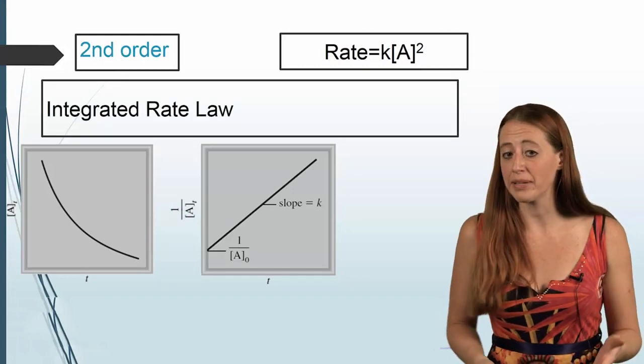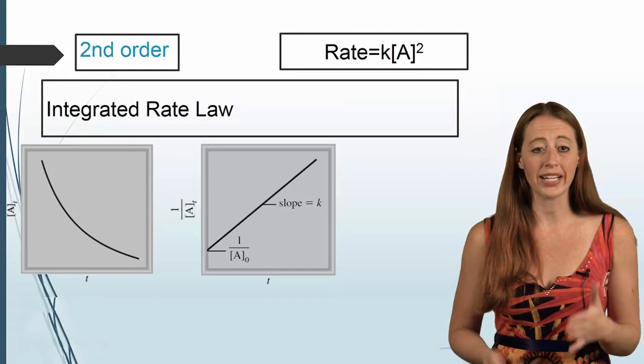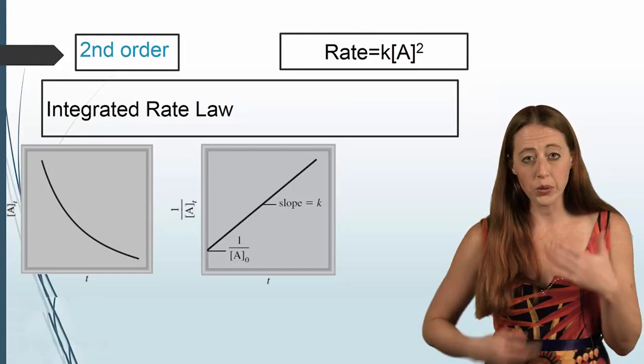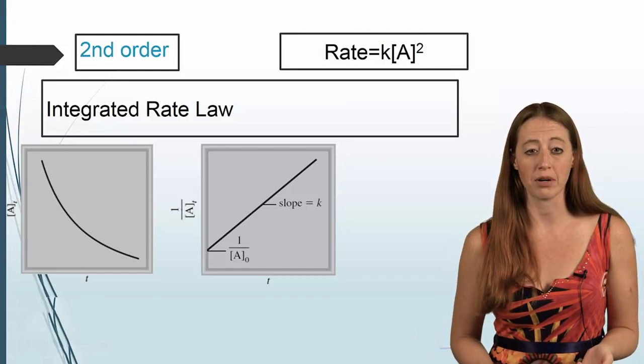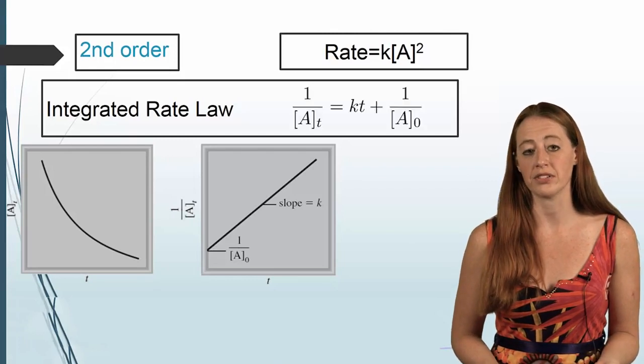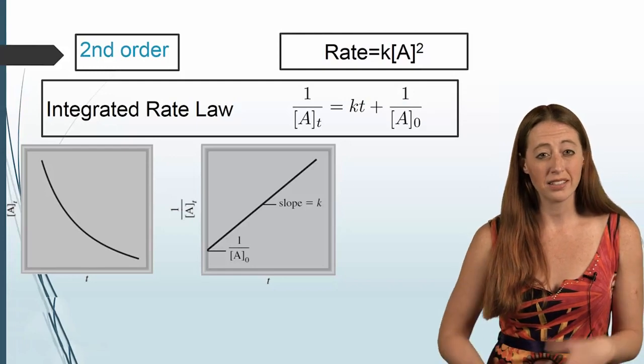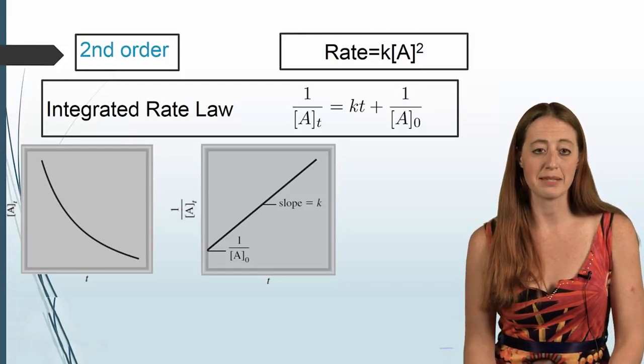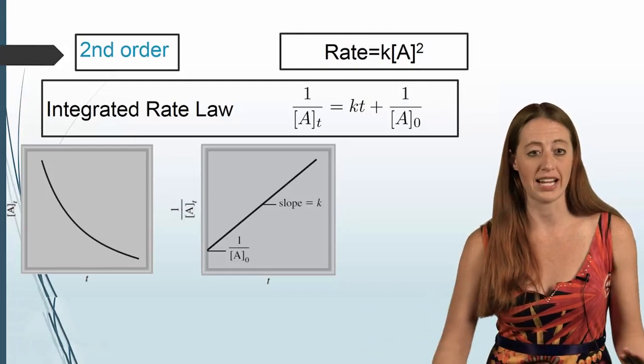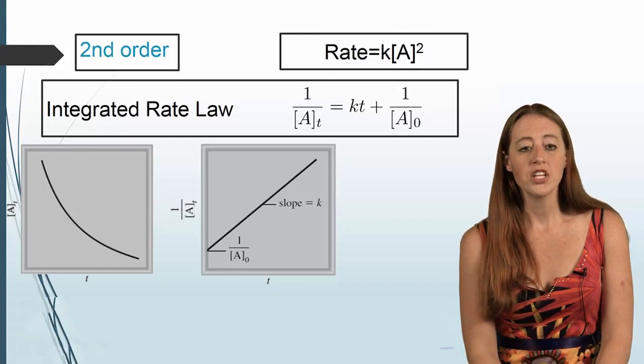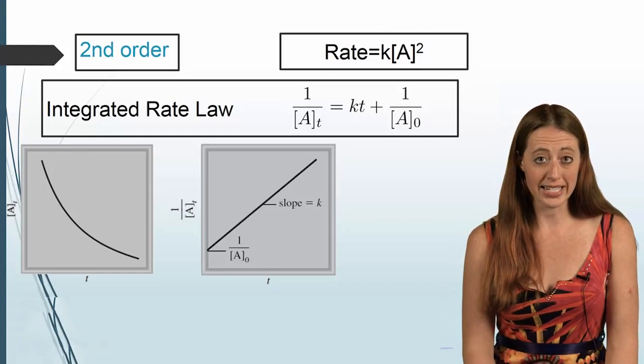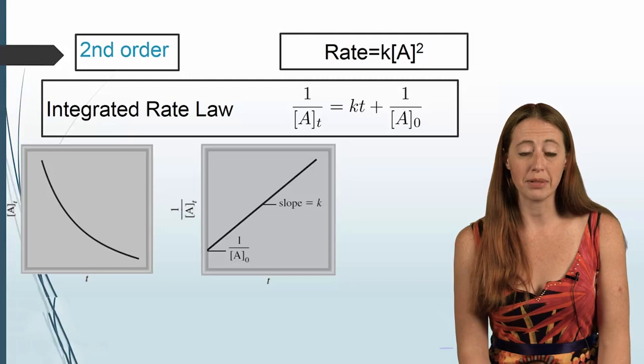And again, if you have had some calculus, I do want you to kind of look at this a little bit and see if you can see where some of these values are coming from, even if you might not be able to replicate it yourself. So our integrated rate law for this one looks a little bit different. And if you know a little bit of calculus, that makes sense because we have A squared, not just A. So here we have 1 over AT equals KT plus 1 over A naught.